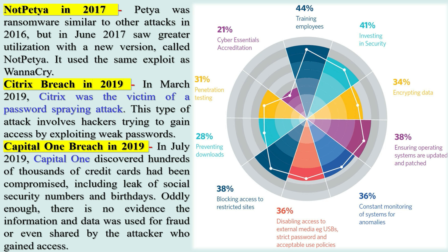Capital One Breach in 2019: In July 2019, Capital One discovered hundreds of thousands of credit cards had been compromised, including the leak of social security numbers and birthdays. Oddly enough, there is no evidence the information and data was used for fraud or even shared by the attacker who gained access.